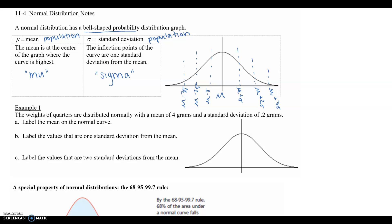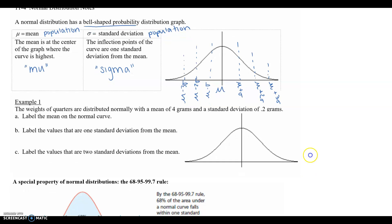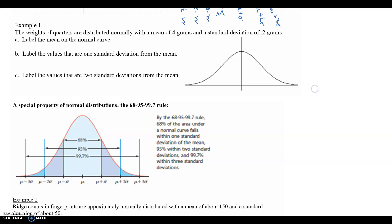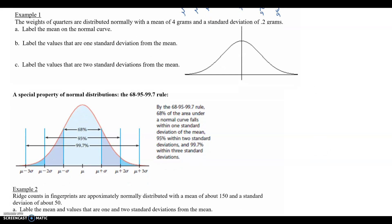So let's do an example that's going to apply it. Example one: The weights of quarters are distributed normally with a mean of four grams and a standard deviation of 0.2 grams. So what we're going to do is label the mean on the curve.